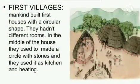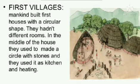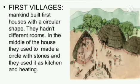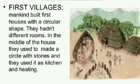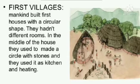These pictures are not in your textbook — they have been downloaded from Google, so don't be confused. This shows the first village mankind built. They built first houses with a circular shape. These houses did not have different rooms — in the middle of the house they used to make a circle with stones and use it as a kitchen and for heating.